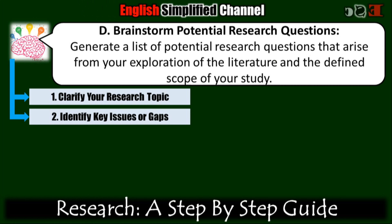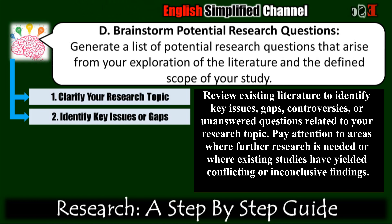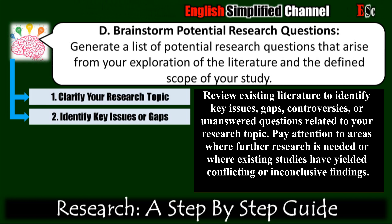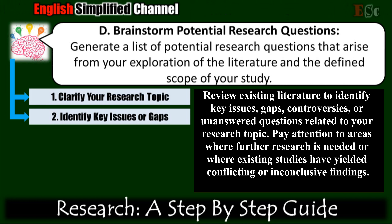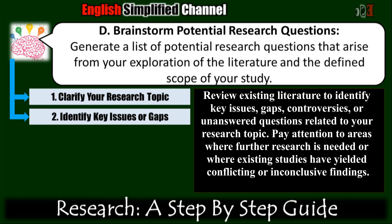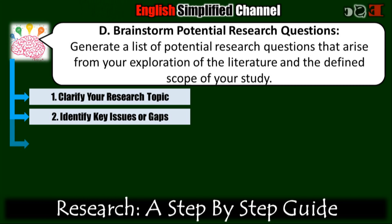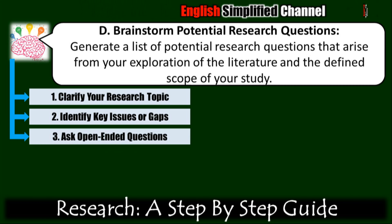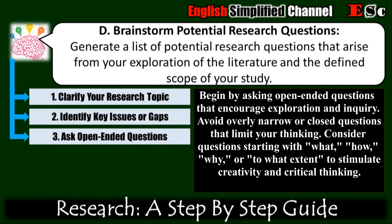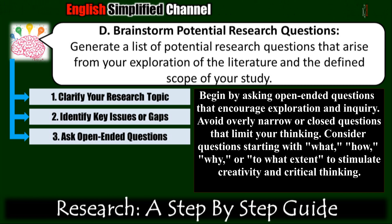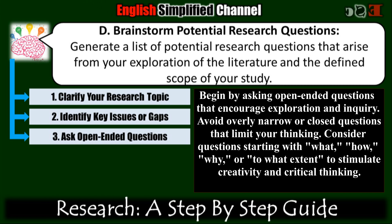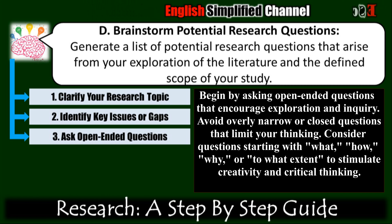Second, identify key issues or gaps. Review existing literature to identify key issues, gaps, controversies, or unanswered questions related to your research topic. Pay attention to areas where further research is needed or where existing studies have yielded conflicting or inconclusive findings. Third, ask open-ended questions. Begin by asking open-ended questions that encourage exploration and inquiry. Avoid overly narrow or closed questions that limit your thinking. Consider questions starting with 'what,' 'how,' 'why,' or 'to what extent' to stimulate creativity and critical thinking.